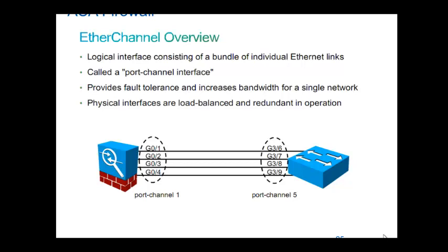If it is STP, it would block three ports and only one would be active — the other three would be unused. Whereas with EtherChannel, load balancing helps utilize the bandwidth in a fully optimized way. Optimum utilization of the links is achieved through EtherChannel, which is not possible through normal STP behavior. EtherChannel provides load balancing capability, redundancy, and helps you utilize the total bandwidth between switches.